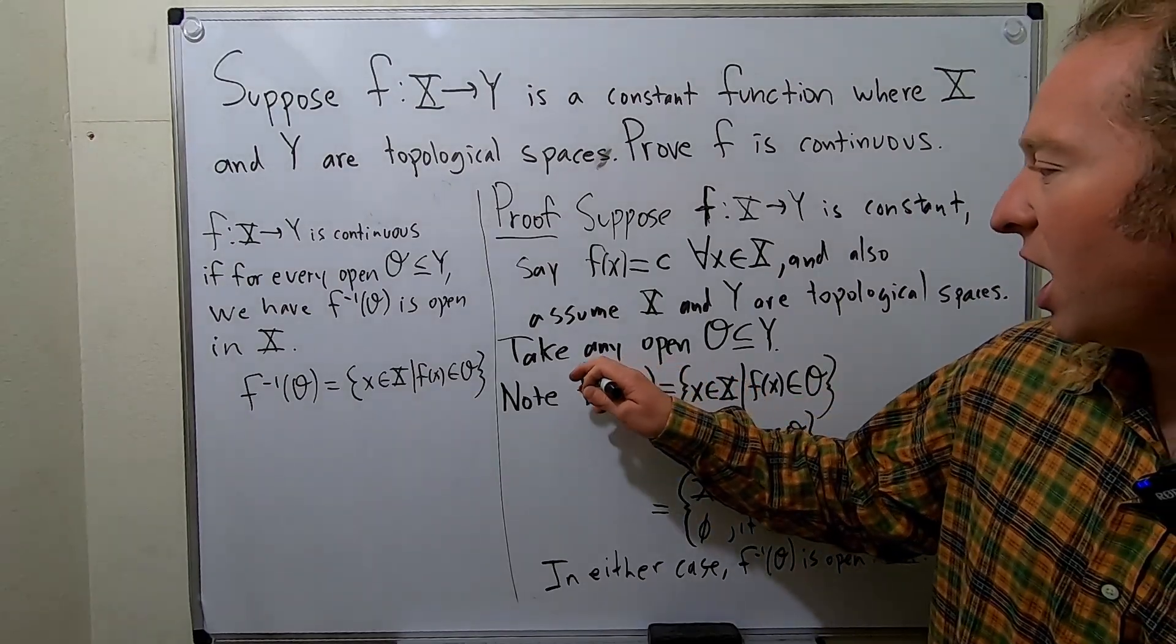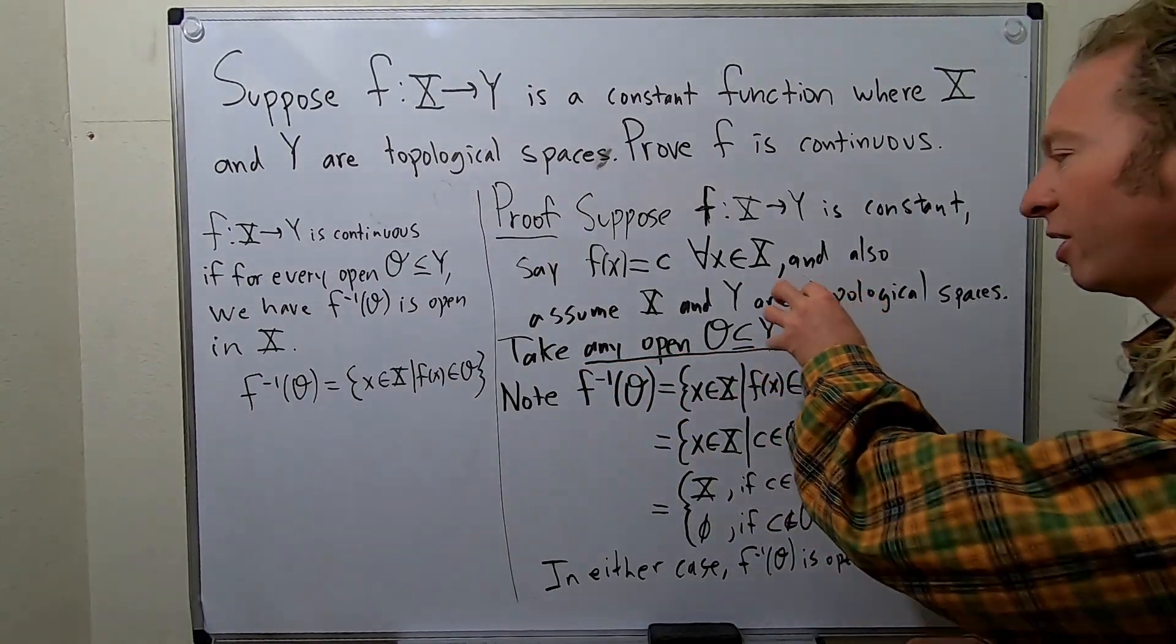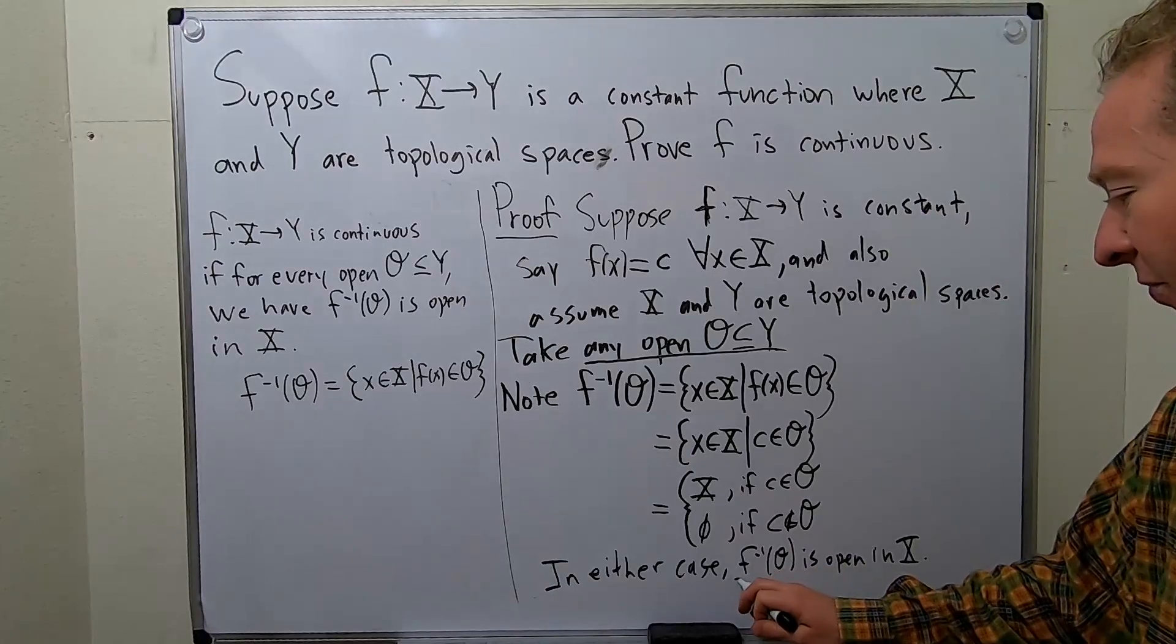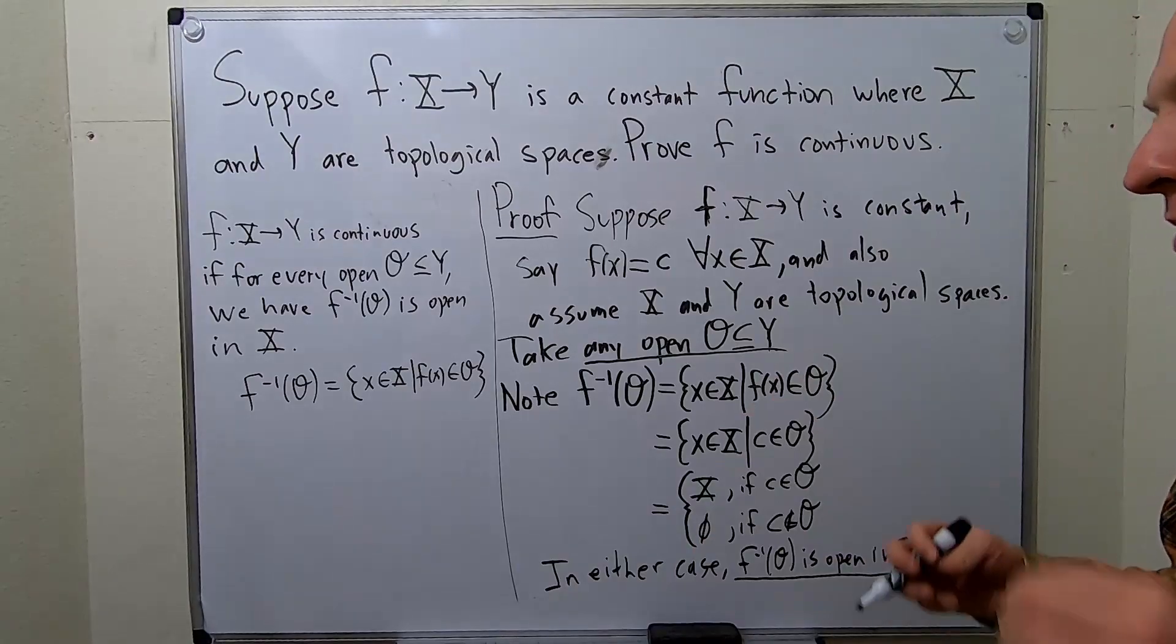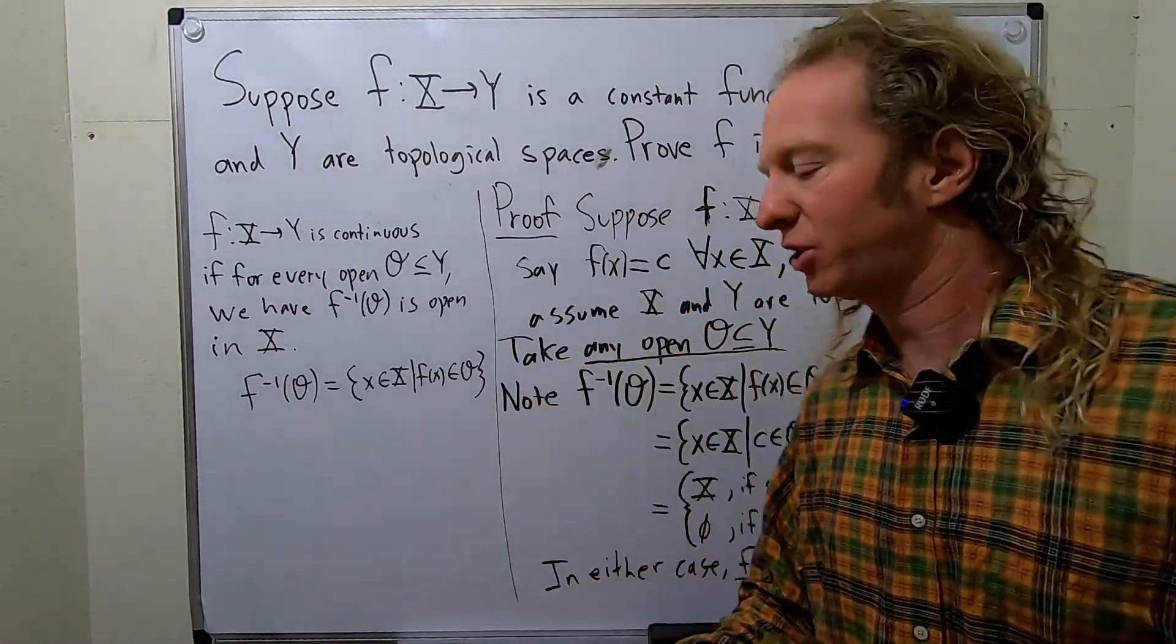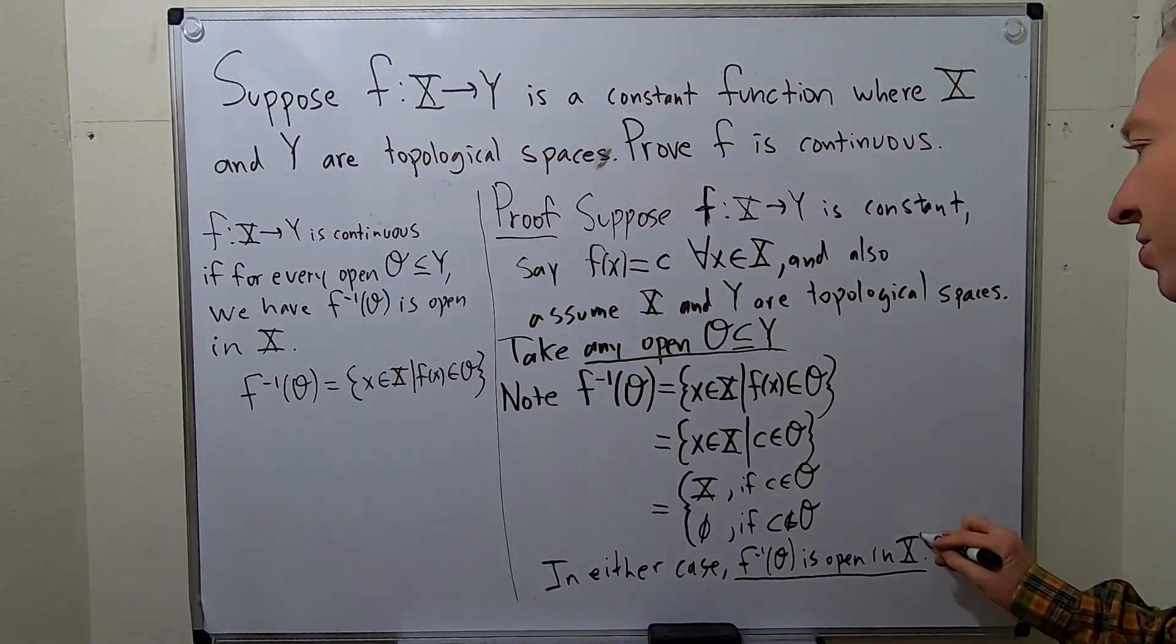So we started with any arbitrary open subset of Y, and we showed that the inverse image of O is open in X. That is exactly what it means for a function to be continuous from a topological standpoint. So we have proven that this function is continuous.